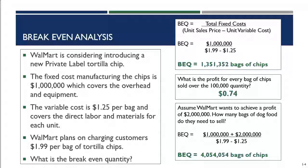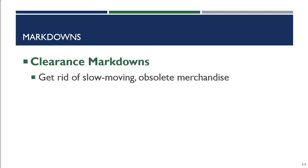Moving on from break-even analysis, we're going to talk about markdowns — specifically clearance markdowns. Retailers mark down products for one of two reasons: the first is clearance, to get rid of slow-moving or obsolete merchandise and dispose of it from the store. The second reason is a promotional markdown, to generate sales of that merchandise. In this section, we'll focus on clearance markdowns.